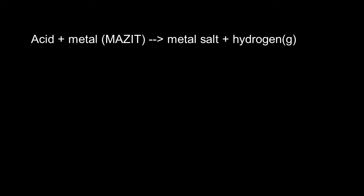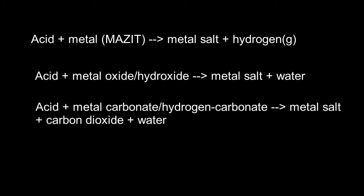An acid plus a metal will give a metal salt and hydrogen. Acid plus metal oxide or hydroxide will give a metal salt plus water. Acid plus metal carbonate or hydrogen carbonate will give metal salt and water and carbon dioxide. An acid and a base will give a metal salt and water.